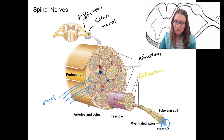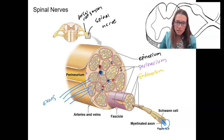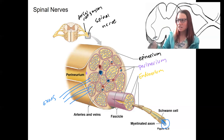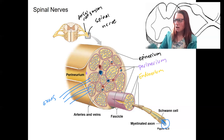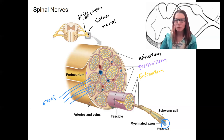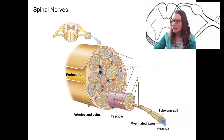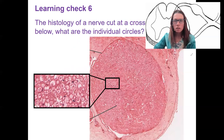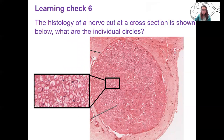Those fascicles are going to be surrounded by perineurium. So that's the perineurium right here, packing together separate fascicles. And if we take off the epineurium, blood vessels are also located in the perineurium packing as well. This cross-section of a nerve is, in reality, a cross-section of a single fascicle, with the perineurium right here.